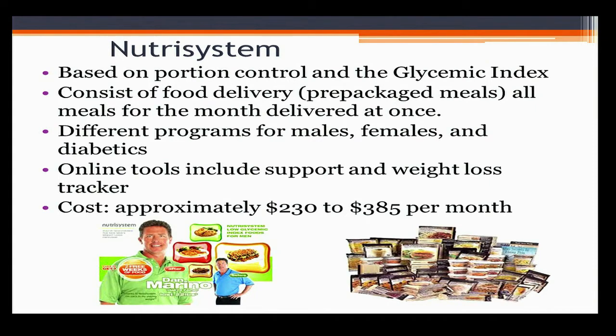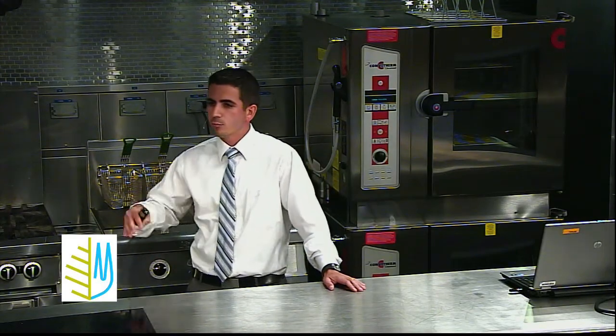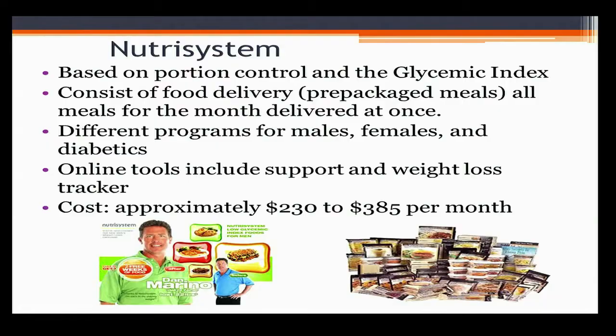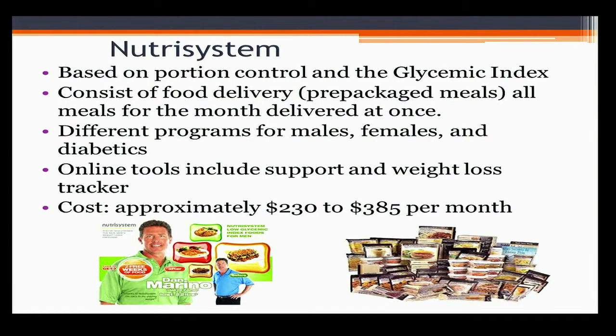Then there's Nutrisystem, advertised by former Miami Dolphins quarterback Dan Marino. It's based on portion control and the glycemic index, which relates to the spike in your blood glucose level. It consists of home delivery of prepackaged food — and the problem with prepackaged foods is they're higher in sodium to preserve them. There are different programs for males, females, and diabetics. There's also an online support component and a weight loss tracker. The cost is anywhere from $230 to $335 per month.